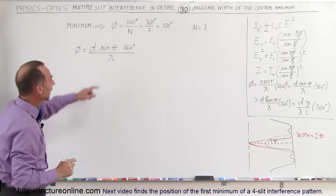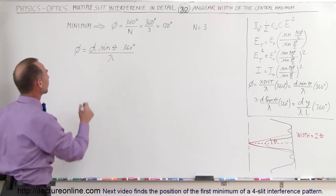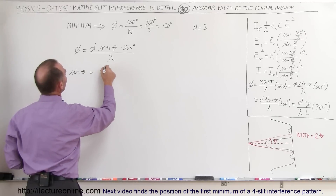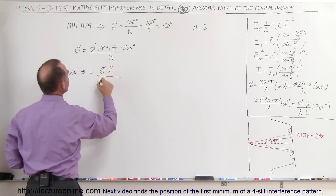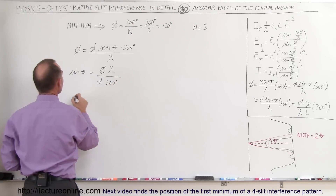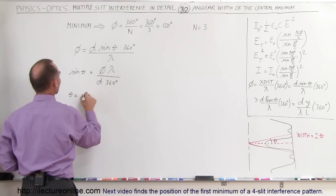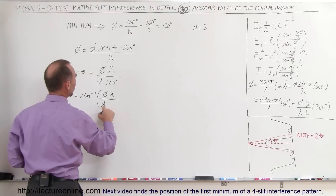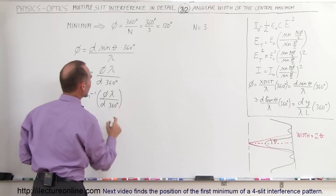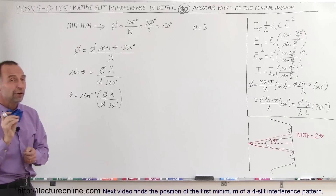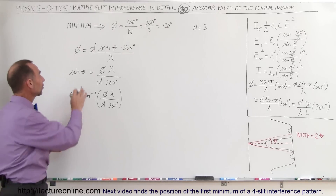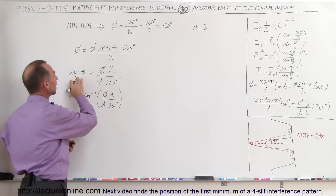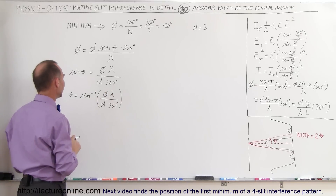Now let's solve for theta. We can say that the sine of theta is equal to the phase difference times lambda divided by D times 360 degrees, which means theta is equal to the arcsine of the phase difference times the wavelength divided by the distance between the slits times 360 degrees. However, we're usually dealing with very small angles, and at very small angles the sine of theta equals theta, so we can replace sine of theta by theta itself.